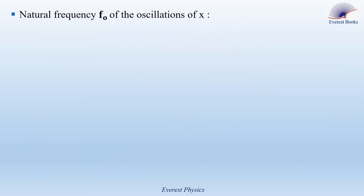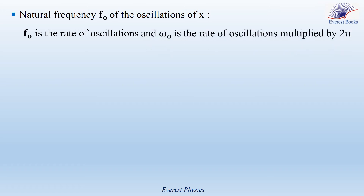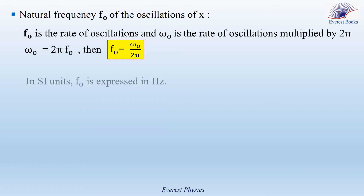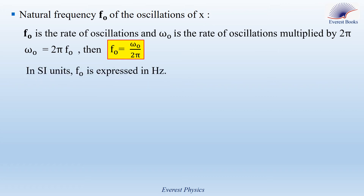Now let's move to the natural frequency f0. f0 is the rate of oscillations. Since omega 0 equals the rate of oscillations multiplied by two pi, we get omega 0 equals two pi f0, so f0 equals omega 0 over two pi. In SI units, f0 is expressed in hertz.